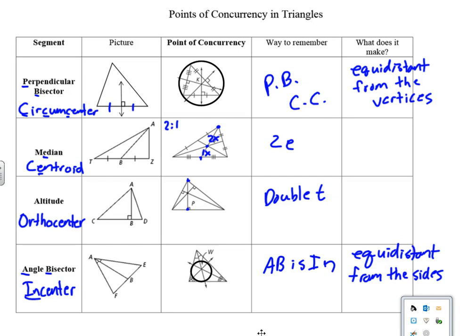PB, CC, PB, CC, PB, CC, 2E, double T, AB is in. 2E, double T, AB is in.